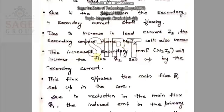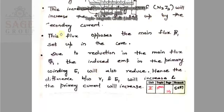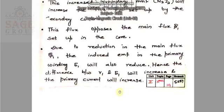This increased secondary MMF that is N2I2 will increase the flux Phi2 set up by the secondary current. This flux opposes the main flux Phi1 set up in the core. And due to the reduction in the main flux Phi1, the induced EMF in the primary winding E1 will also reduce. Hence, the difference between V1 and E1 will increase and the primary current will increase.